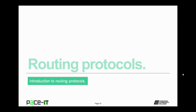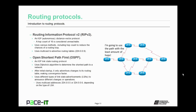Now let's move on to the routing protocols themselves. First up is Routing Information Protocol version 2, RIP version 2. RIP is an IGP distance vector protocol. For a route to be placed in the routing table, it can be no more than 15 hops away — a hop count of 16 is considered unreachable. It uses various methods, including the hop count, to reduce the chances of a routing loop occurring. RIP version 2 uses multicast address 224.0.0.9 to advertise its routing table.